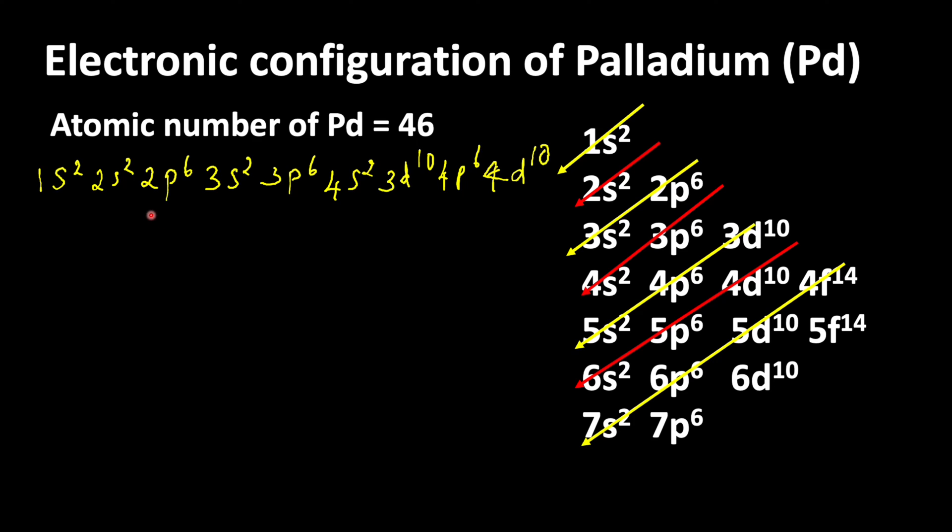This electronic configuration can be written in simplified form by using that noble gas configuration. Here from 1s to 4p6 represents that Krypton, whose atomic number is 36.